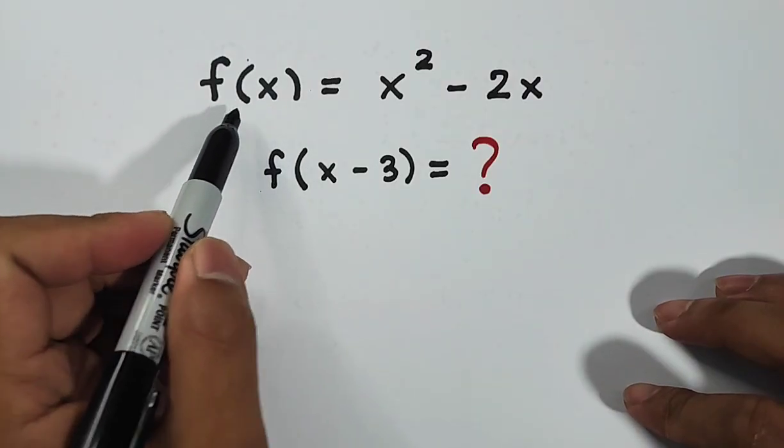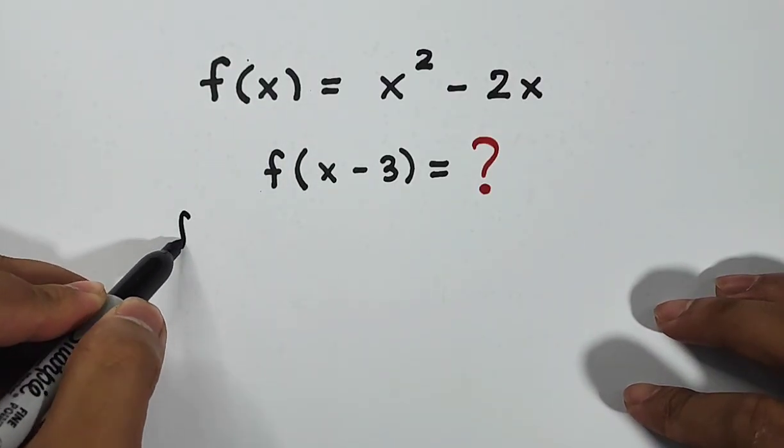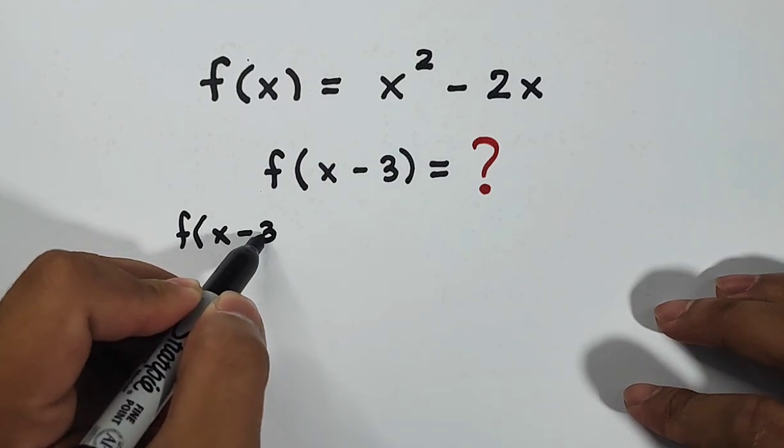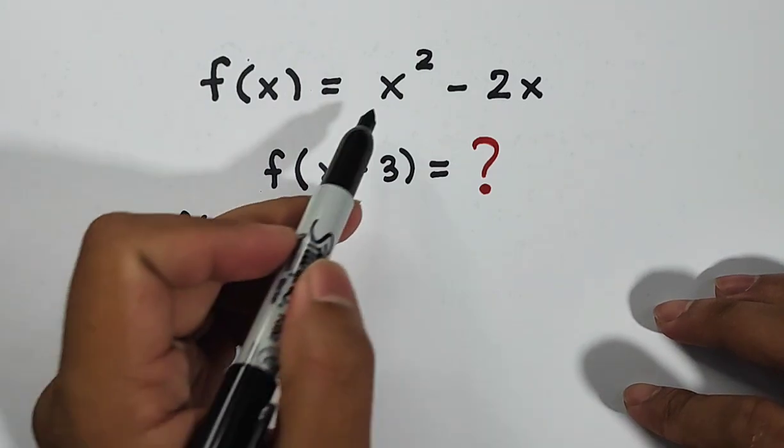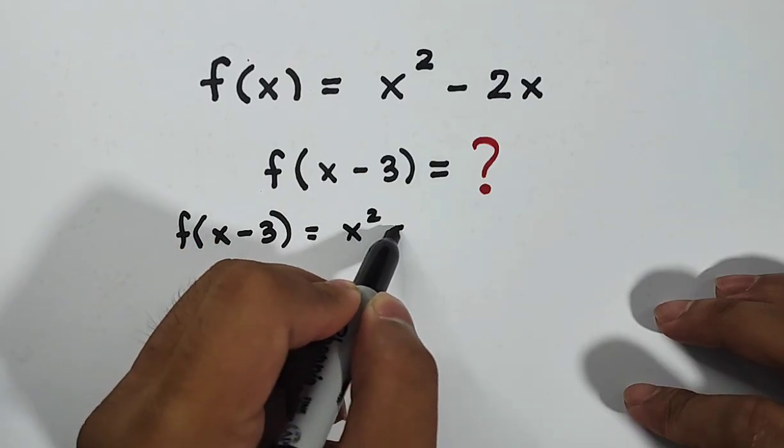So it will go like this. For this part, copy this one. You have f(x - 3), and then copy your original function is equal to x squared minus 2x.